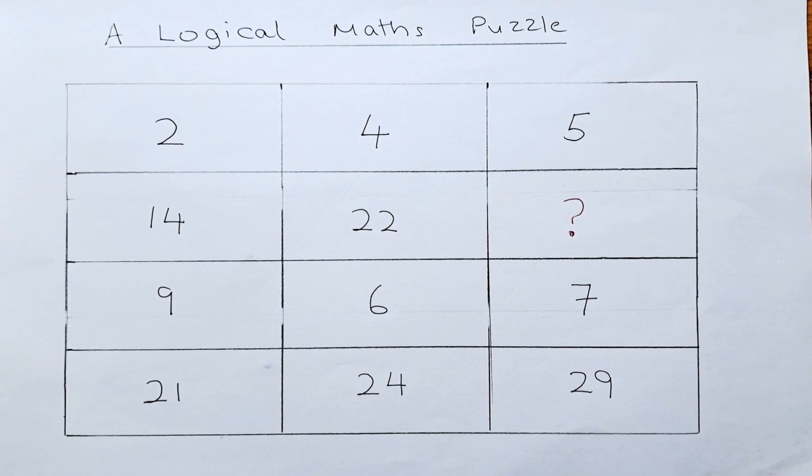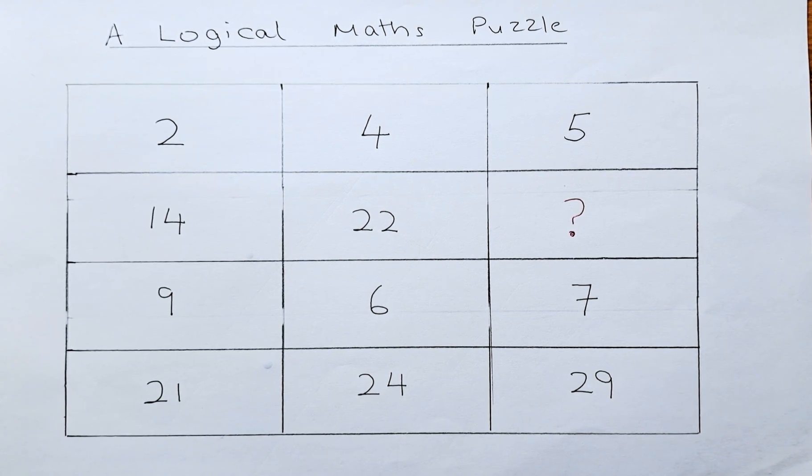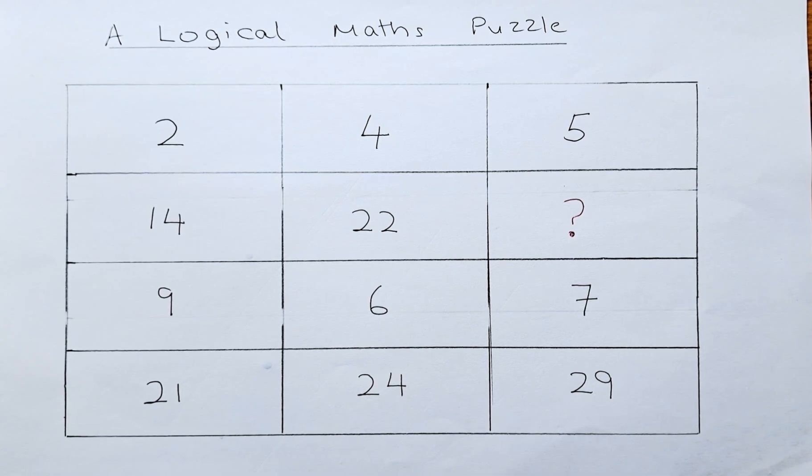You have small numbers on the top, followed by bigger numbers on the second row, followed by smaller numbers again in the third row, and the fourth row the numbers get bigger again. So the first and the third row, the numbers are small, while the second and the fourth row, the numbers are much bigger.